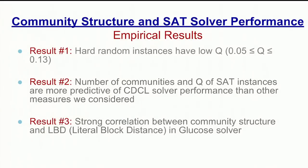Our take-home message is supported by three concrete results. The first is that hard random instances typically have a low Q value between 0.05 and 0.13. The second is that the number of communities and the Q value of SAT instances is more predictive of SAT solver performance than other metrics such as number of clauses and number of variables. And we've also seen a strong correlation between the community structure and the literal block distance in the glucose solver.